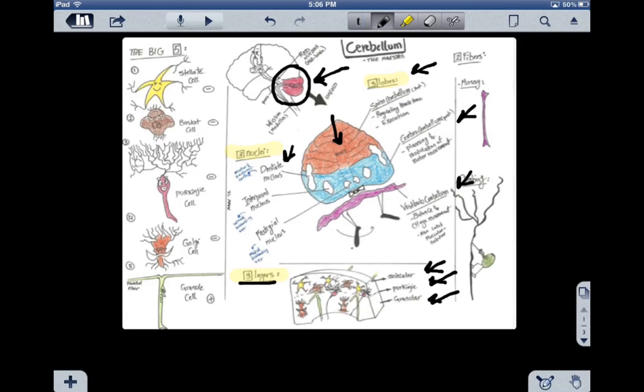There are two major fibers in the cerebellum, which are mossy fibers and climbing fibers. Also, it's important to note that we have five major cells in the cerebellum.